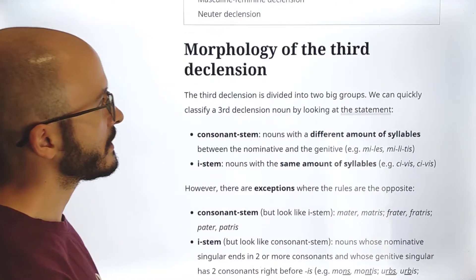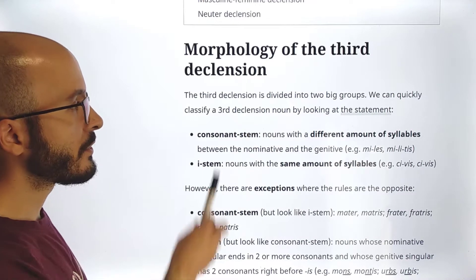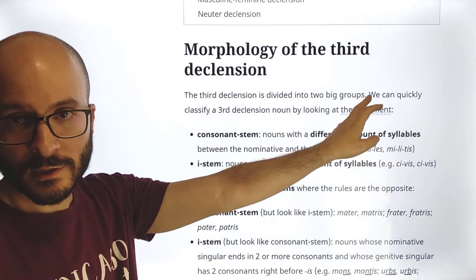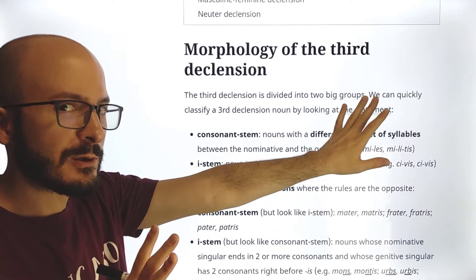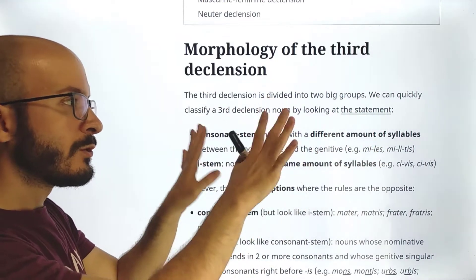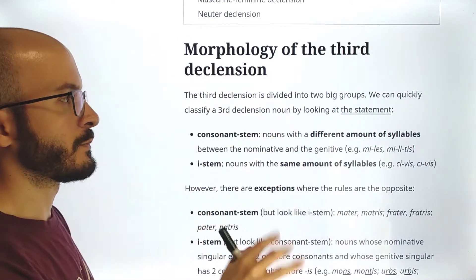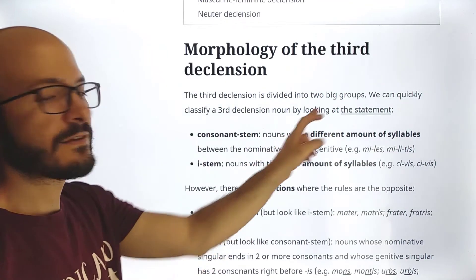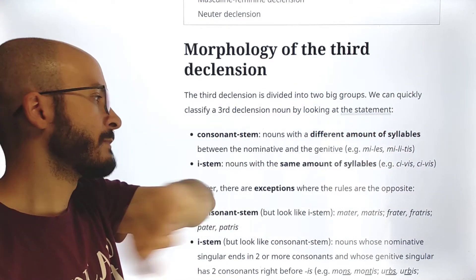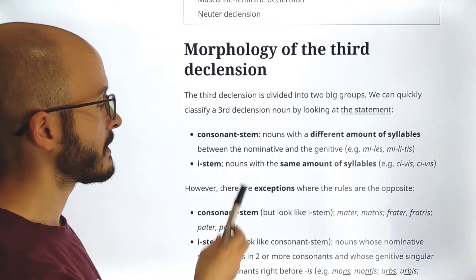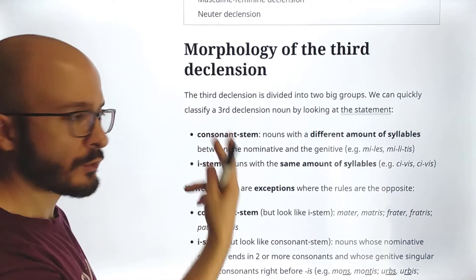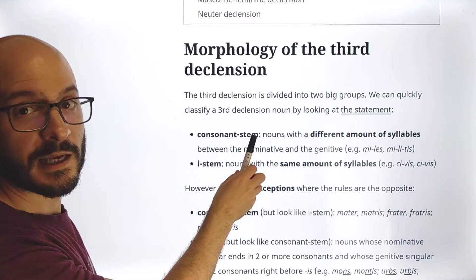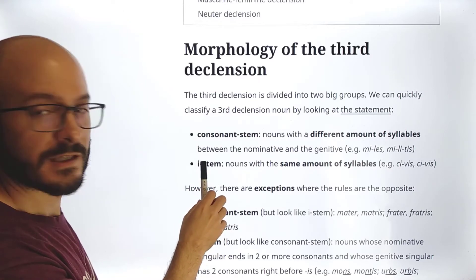Morphology of the third declension. The third declension is divided into two big groups — and it's not just two tables. We can quickly classify a third declension noun by looking at the statement. So we have these two big groups: first, consonant stem, and then e-stem.